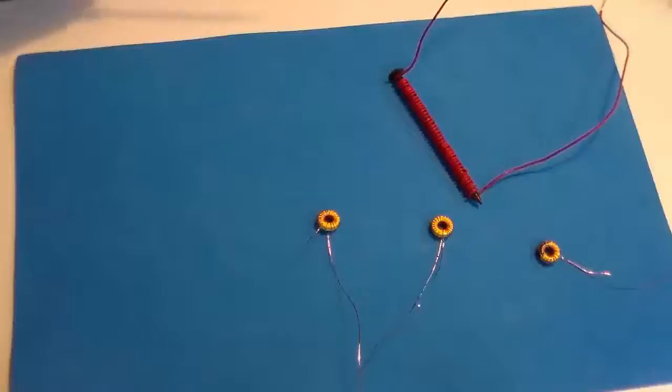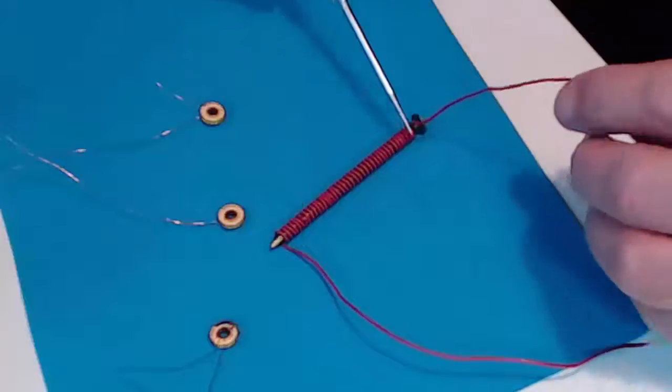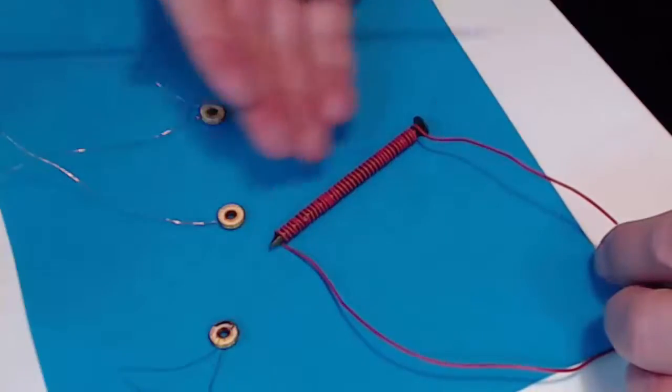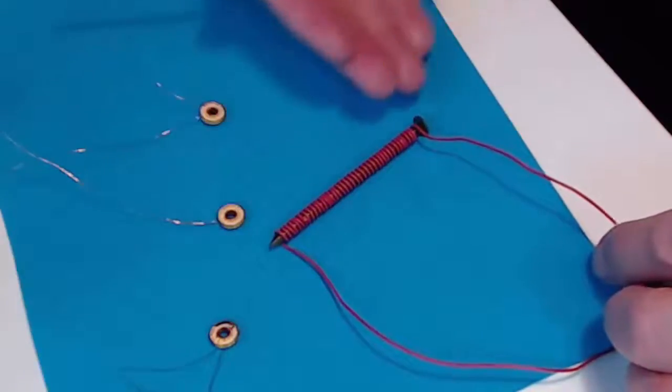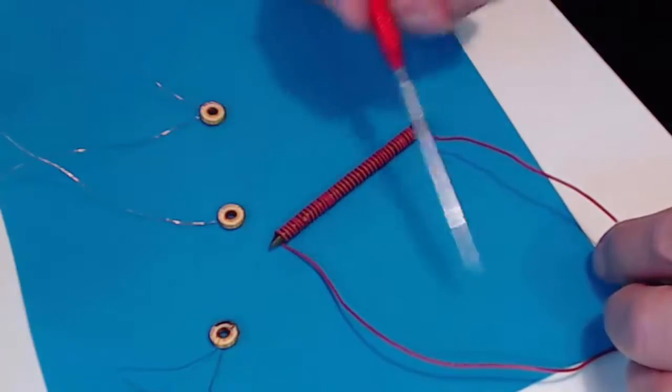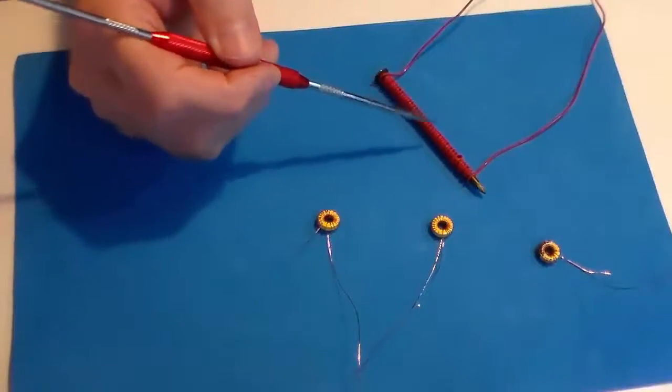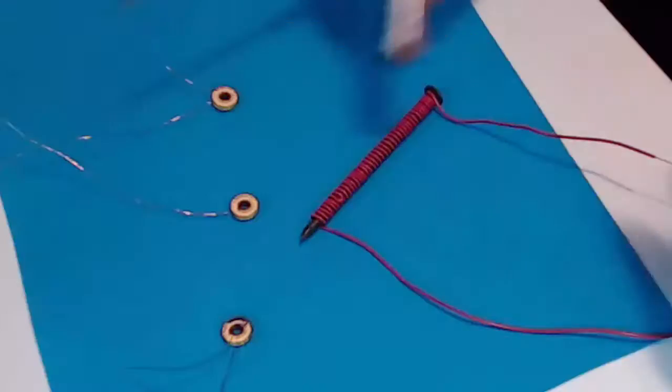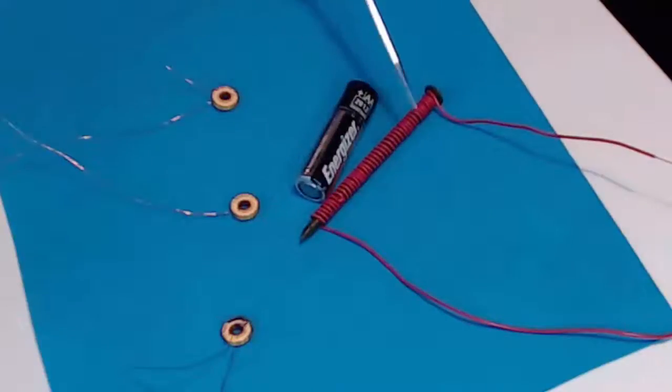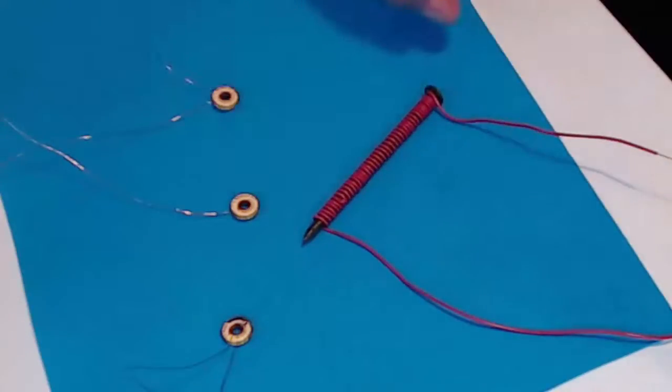The reason that works is because when we run electricity through a coil, it builds up a magnetic field around it. We have an electromagnet. The cool thing is, we can do exactly the opposite. We can take a coil like this, and if we had a magnet, and we move the magnet back and forth along the side of this coil, the magnetic field of the magnet would create a flow of electrons in our wire. That's how generators work.